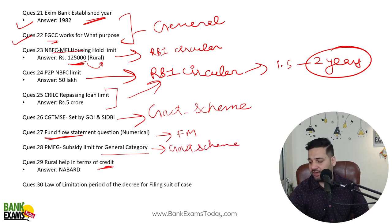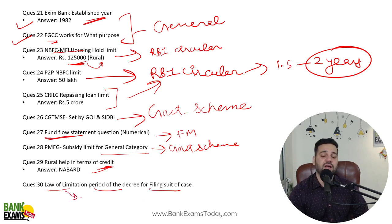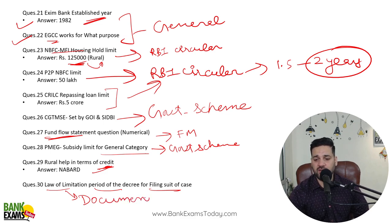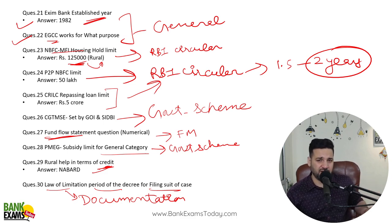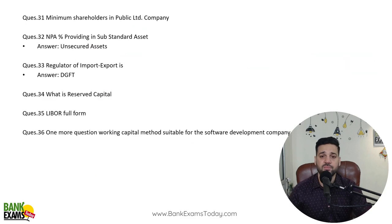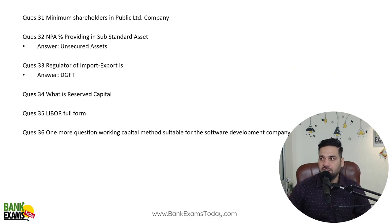Rural help in terms of credit — NABARD's functions. Law of limitation period — law of limitation period for filing a decree or suit. There is a chapter called documentation in the course, and all these topics including law of limitation are covered under documentation. Law of limitation is a small topic under the documentation chapter — please go through the documentation chapter available in the course. Minimum shareholders in a public limited company — again a general question. You don't need to read the entire Companies Act for this.